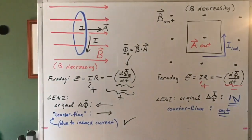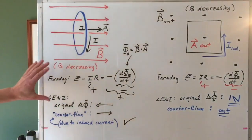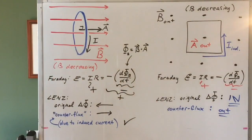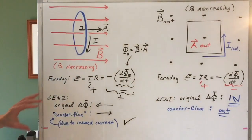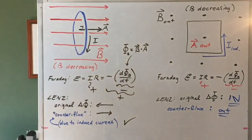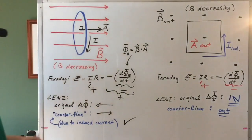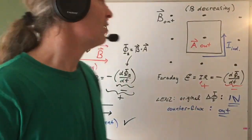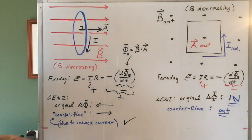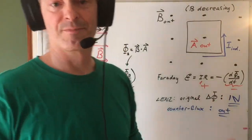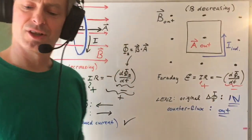That's two different ways to get directions of induced currents. One way is directly from sign conventions carefully applied to Faraday's law of induction. The second way is through Lenz's law: the induced voltage and induced current produced by a changing flux must produce a counter flux that opposes the original flux that produced them in the first place. Thanks for watching.